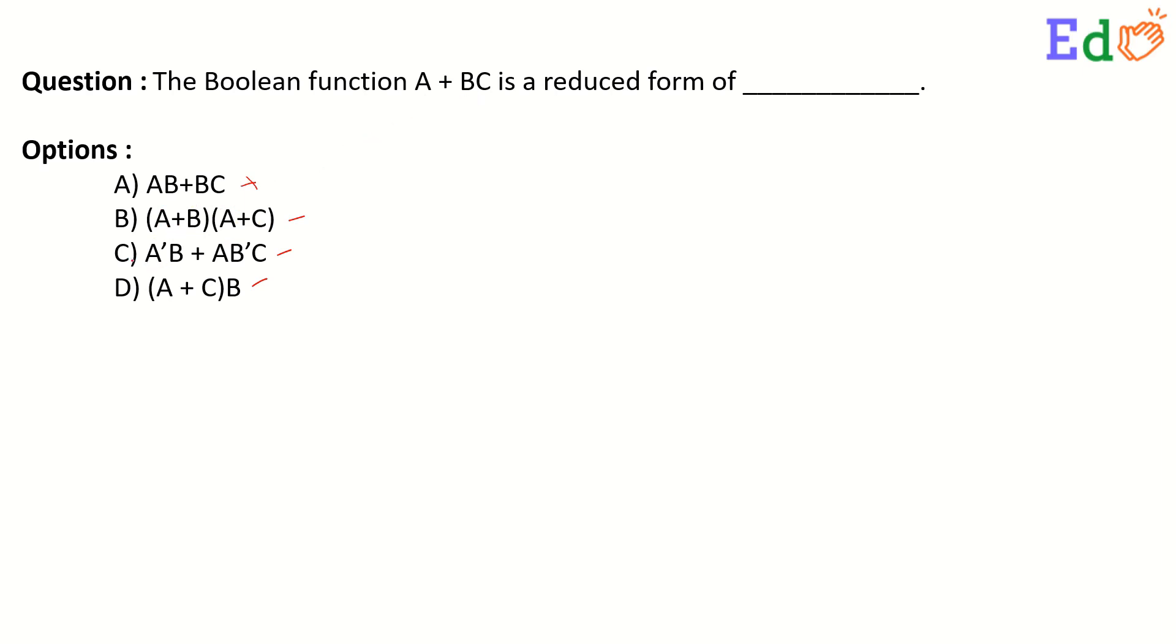Option C is A complement B plus AB complement C. Here all the factors are not present in the reduced form, so this is also not the correct form. The last one has A plus C whole dot B, which is AB plus BC, which is also not the actual reduced format. So we can actually check option B for its correctness.